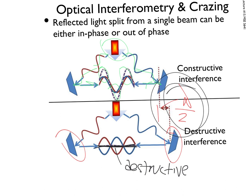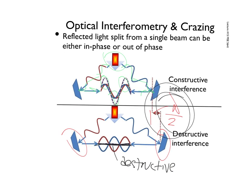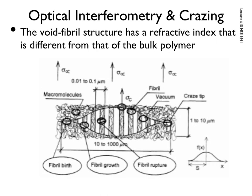These bands of light and dark, and the thickness of those bands, has to do with the angle that the crazed interface is making with the incoming light. It's an older technique, but we learn so much from it — it's still worth talking about.